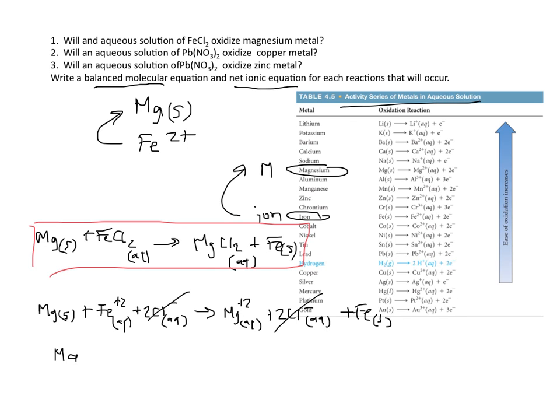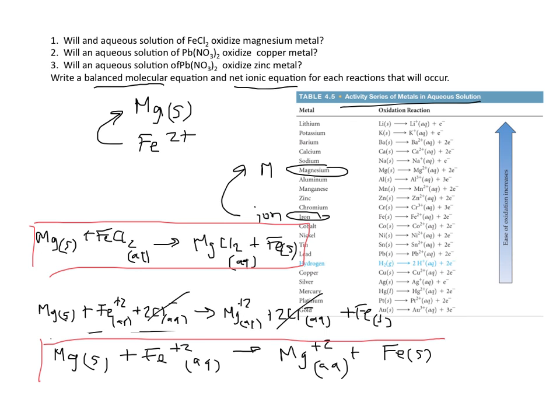So our net ionic equation is going to look like the following. So we can go ahead and make sure that we write out if we're in our aqueous format or our solid format, make sure we do that. But we have our molecular equation and our net ionic equation for a reaction that actually does occur.